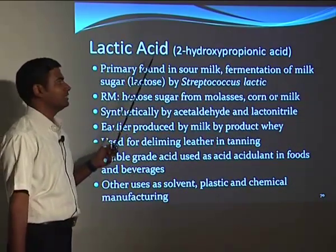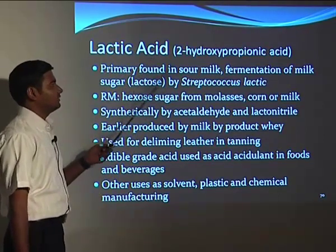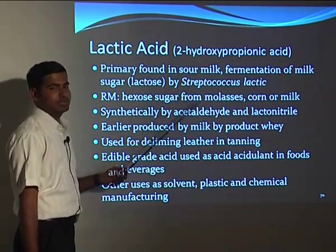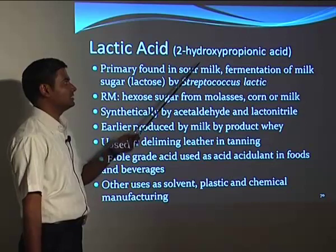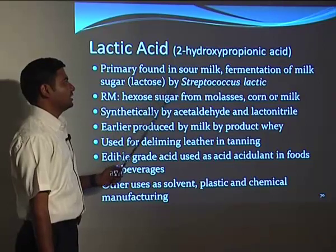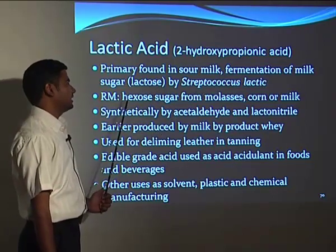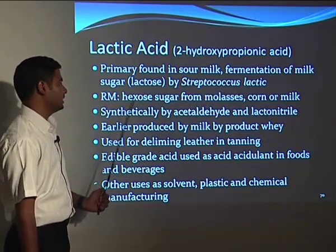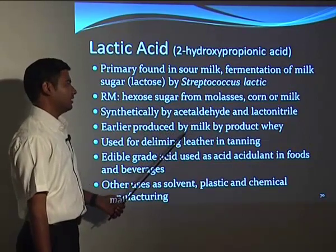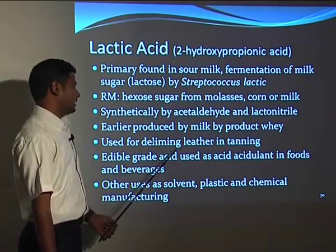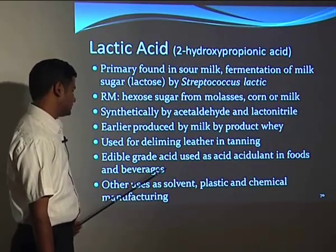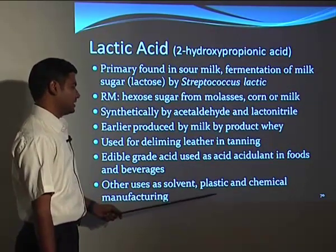Lactic acid, commonly found in curd, is scientifically known as 2-hydroxypropionic acid. At its central carbon, four different groups are attached, making it a chiral molecule. It is primarily found in sour milk, produced by fermentation of milk sugar (lactose) by Streptococcus lactis. Raw materials include hexose sugars from molasses, corn, or milk; it can also be produced synthetically from acetaldehyde and lactonitrile. It is used for deliming leather in tanning, as an acidulant in foods and beverages, and as a solvent and in plastic and chemical manufacturing.